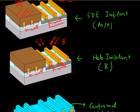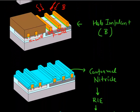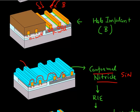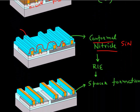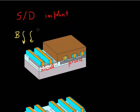The next step is to form a spacer. You deposit a conformal film of silicon nitride throughout your wafer so it covers the entire surface. Then you do a RIE dry etch to remove the nitride on the flat surfaces but leave the nitride on the sidewalls, forming a sidewall spacer of nitride. Once this sidewall spacer is deposited, the next step is to do the deep source and drain implants.